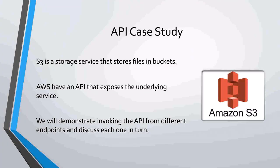This was the non-technical explanation of what an API is. What follows now focuses on one of the services provided by Amazon — the S3 service. S3 is a service that allows one to store files in what Amazon terms 'buckets'. This is similar to OneDrive by Microsoft and Google Drive by Google. We will be looking at the AWS API profile for S3 and will demonstrate how this API can be invoked from different endpoints to perform the same function — specifically, creating an empty bucket.